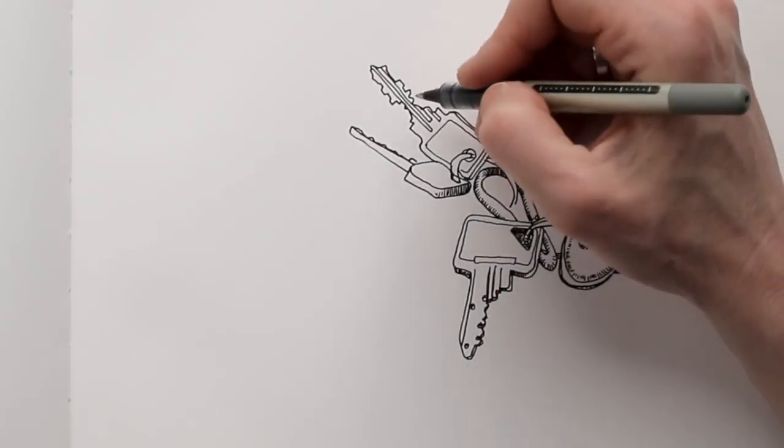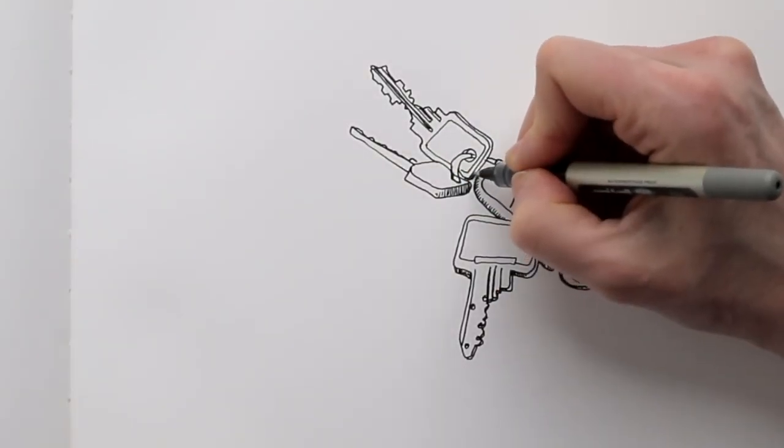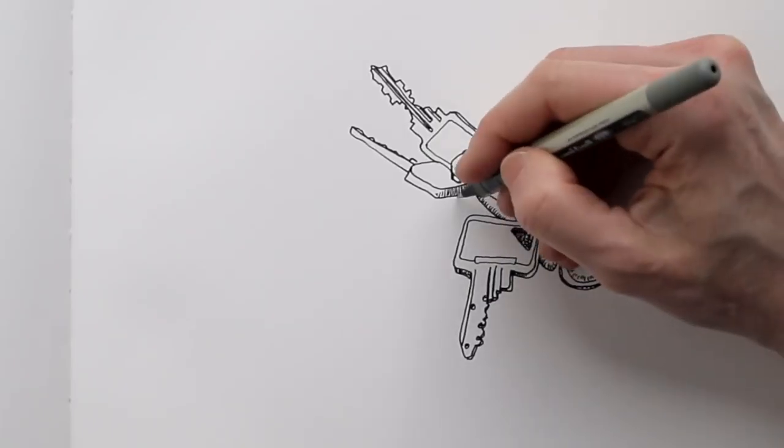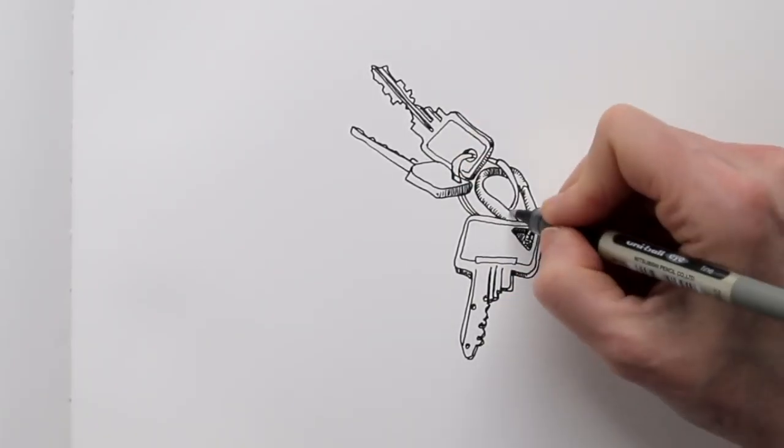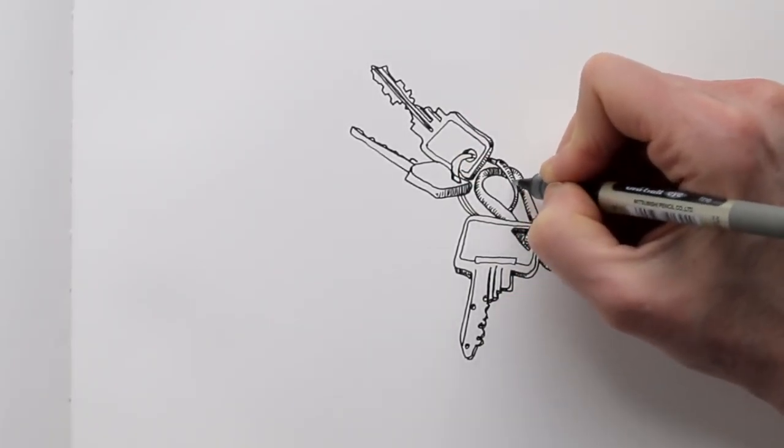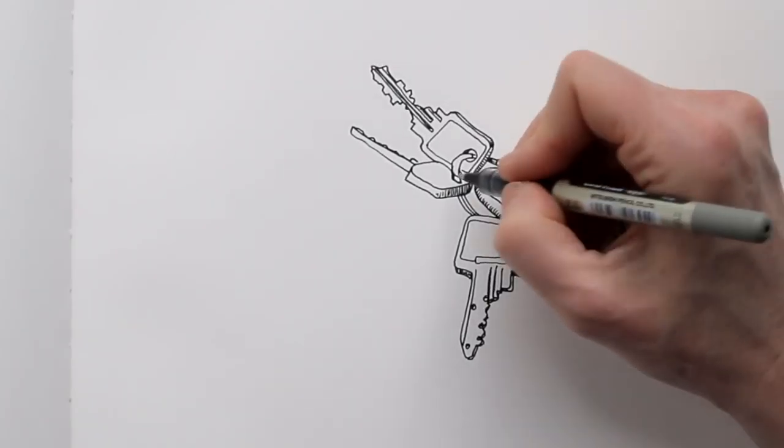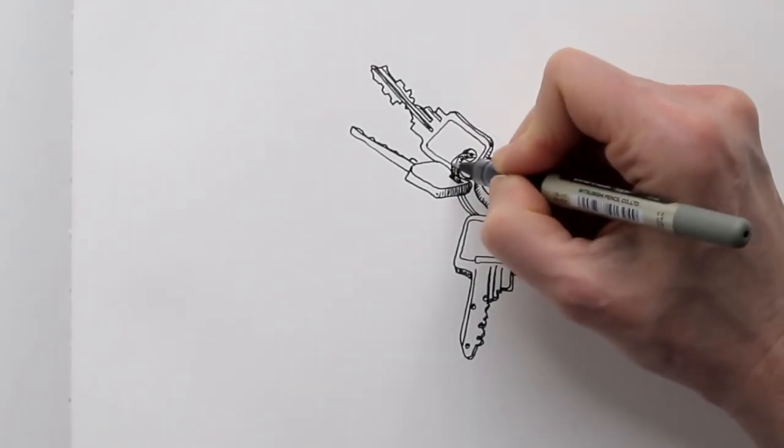So whenever you have no idea what to draw, take out your house keys and draw them. You can even add lettering. For example, write down which key leads to which room or door. Maybe a little story about it too.